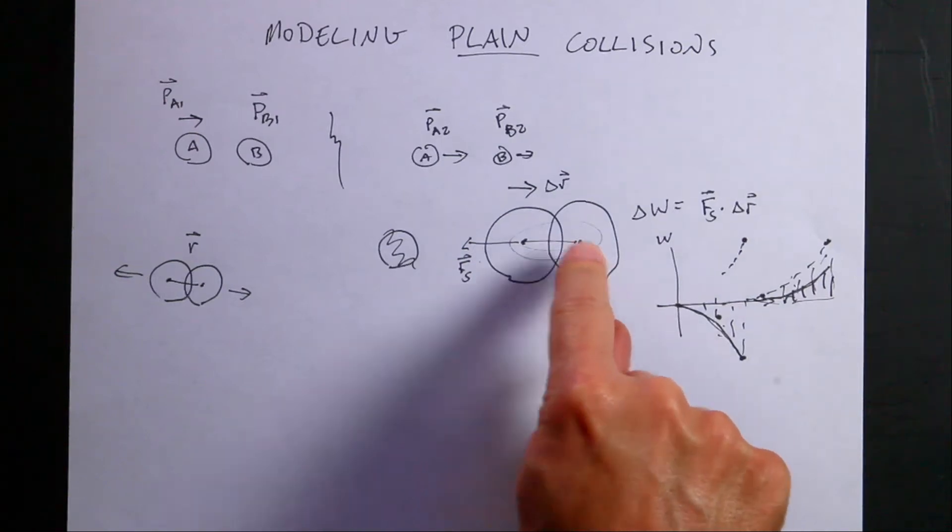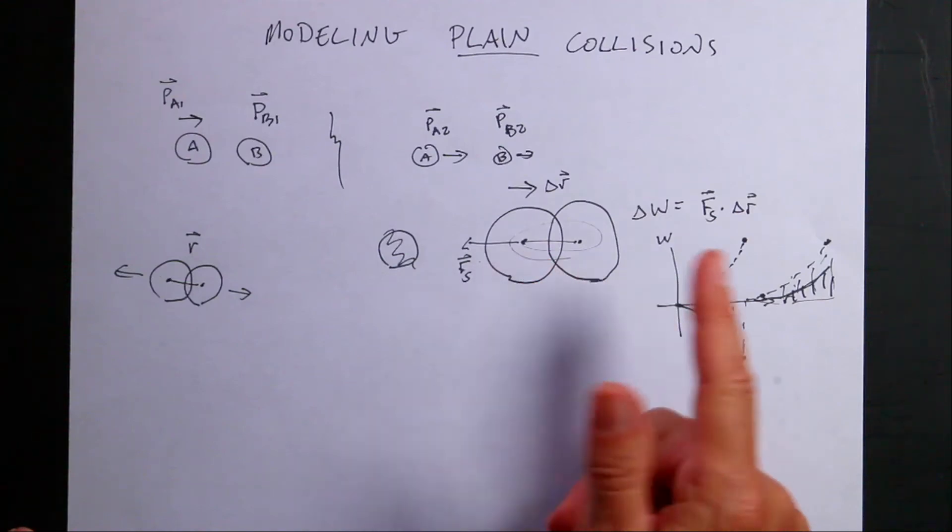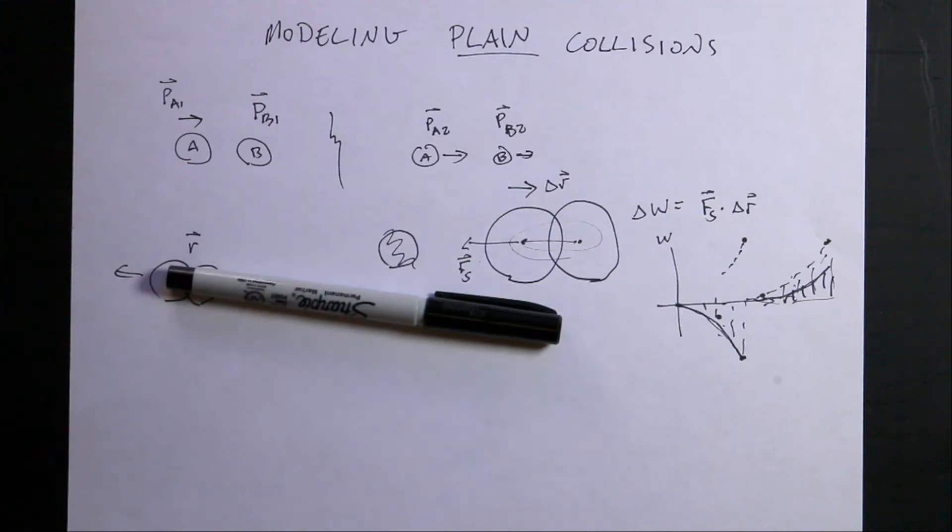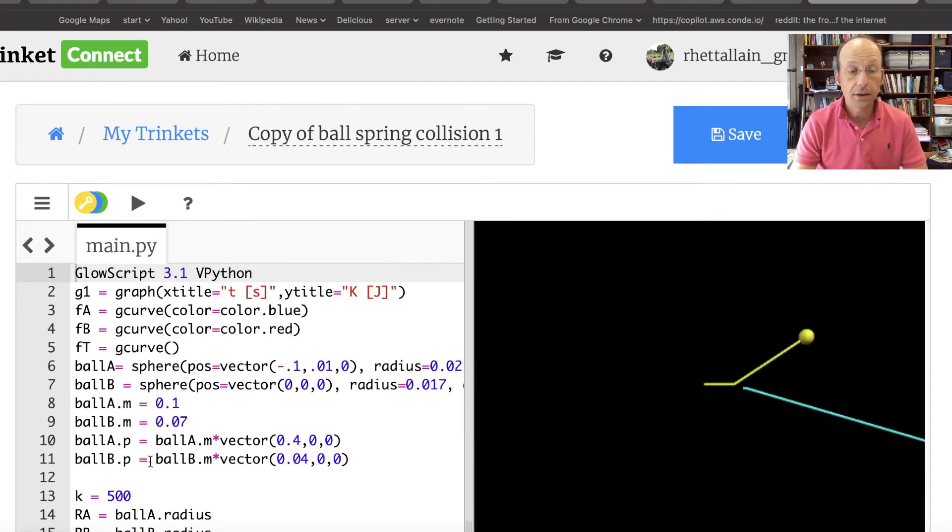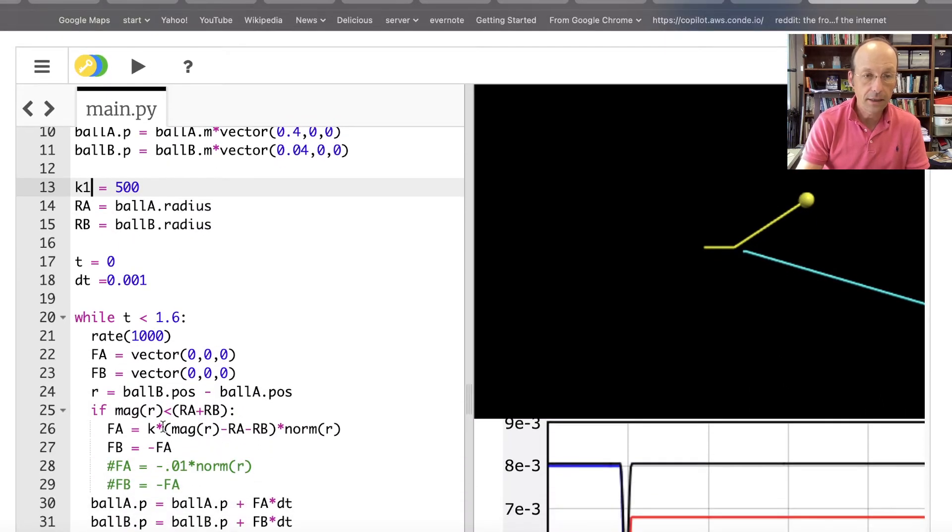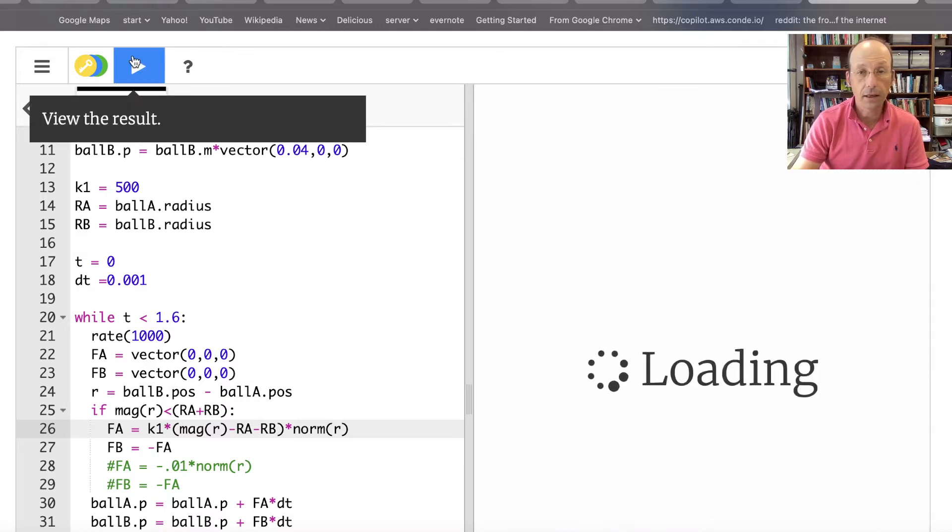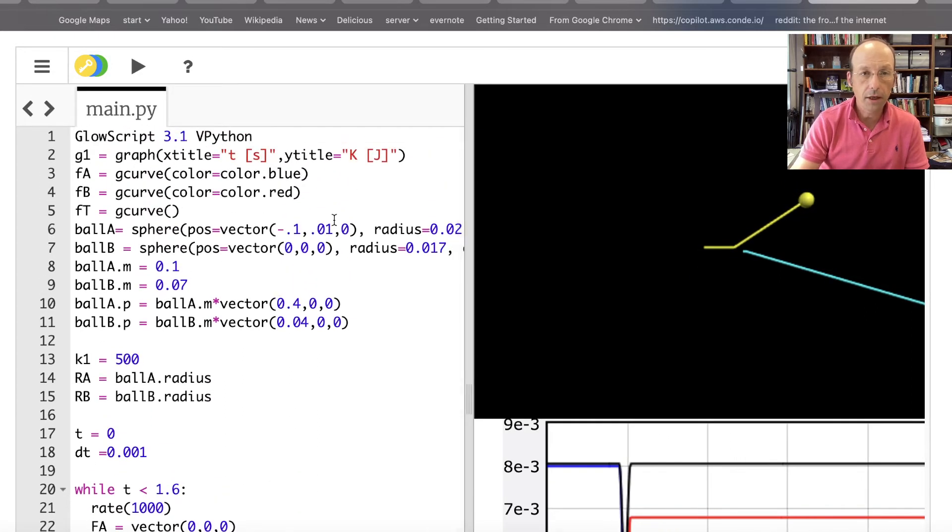I'm going to start off with a massive object colliding with a low mass object because it just makes more sense. This is the code from the elastic collision. The first thing I want to do is just change this. I'm going to call this k1, my spring constant. So k1 is still 500. Then down here I need to say k1. I'll run that, make sure it runs. Now let's change the mass of ball B to something really heavy, like 7. And I want to have it at rest.